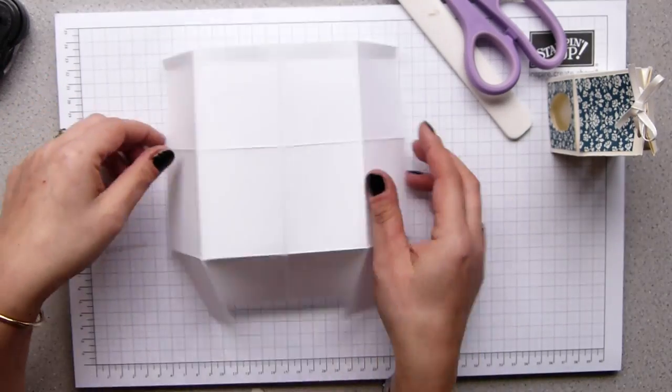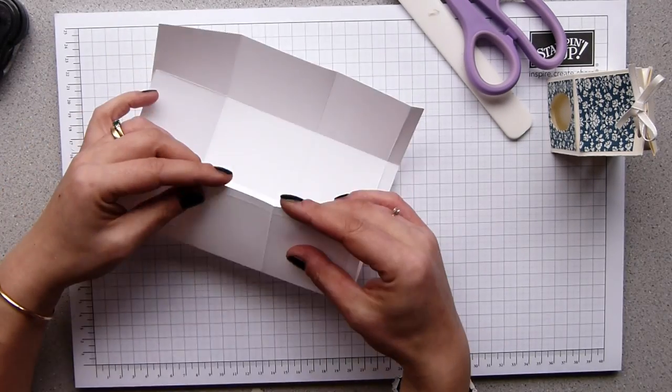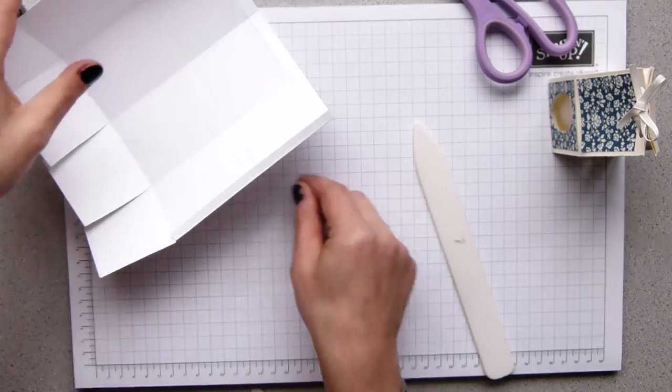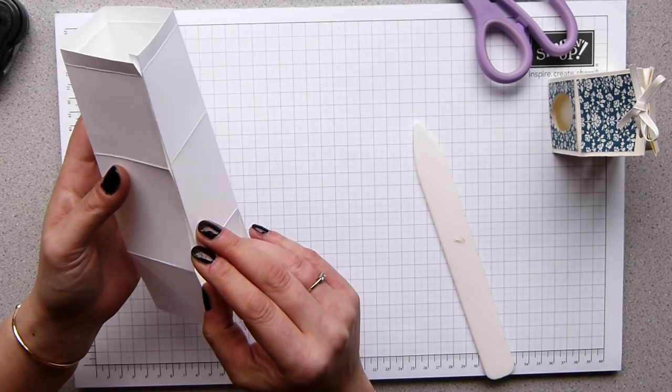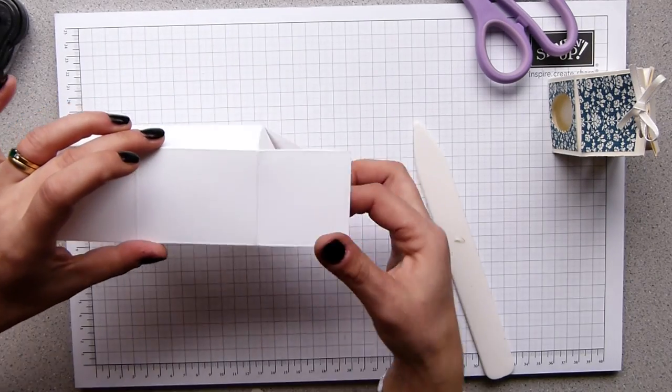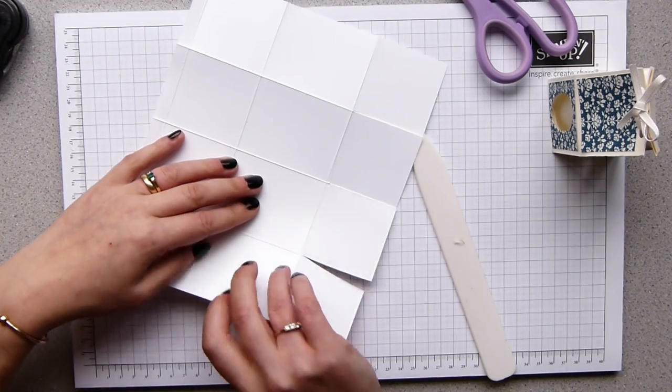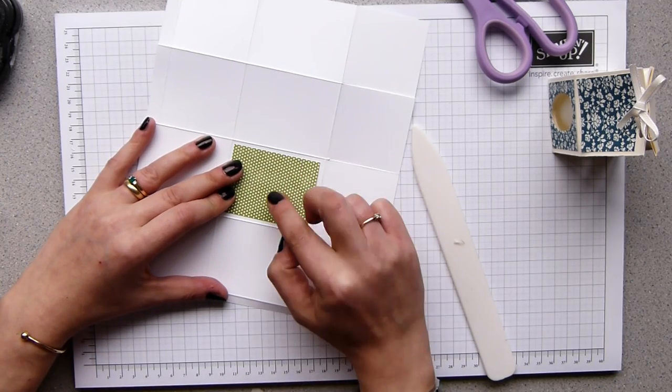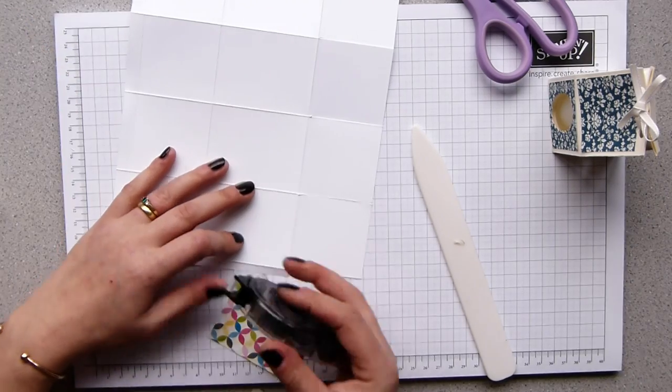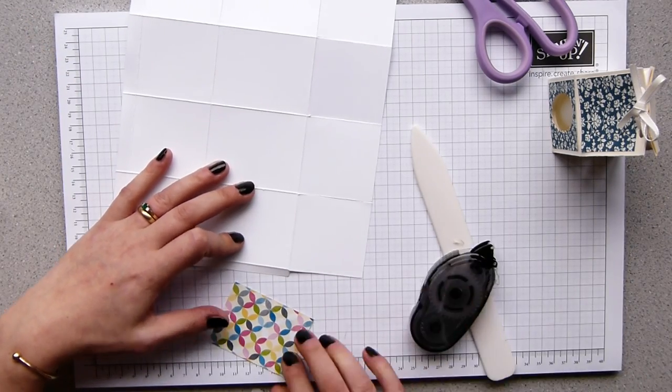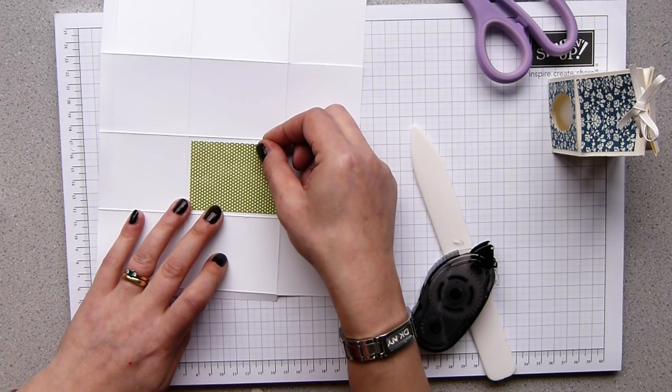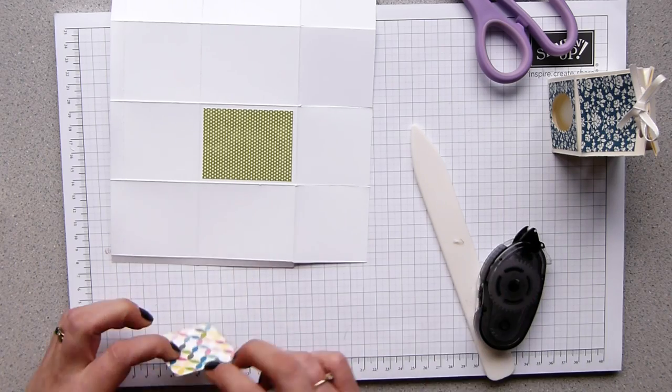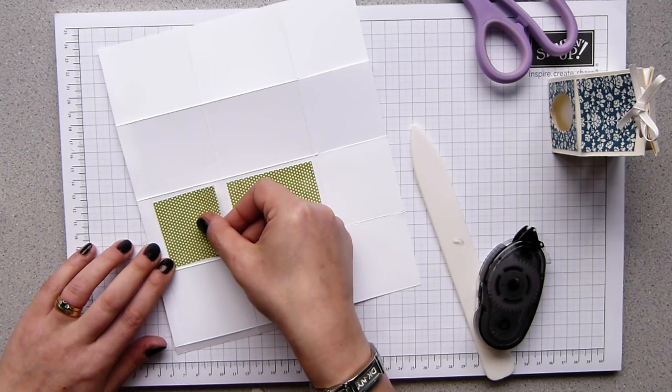So let's put some designer series paper on now. We want to find out which bit's going to be our front. This section here, where our adhesive's going to be, is the back, so that therefore means that is the front. That's where I want to put my designer series paper. This is from Sunshine and Sprinkles, but I like this lovely green. It measures two inches by two and five eighths of an inch on the front, and the top measures two by two.